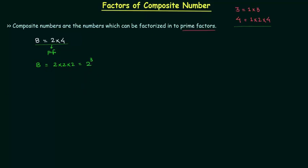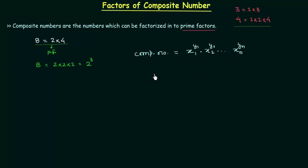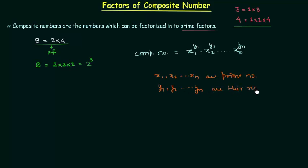Now I will generalize this. A composite number equals x1 raised to the power y1, multiplied by x2 raised to the power y2, up to xn raised to the power yn. Here x1, x2, and xn are nothing but prime numbers, and y1, y2, and yn are their respective indices.